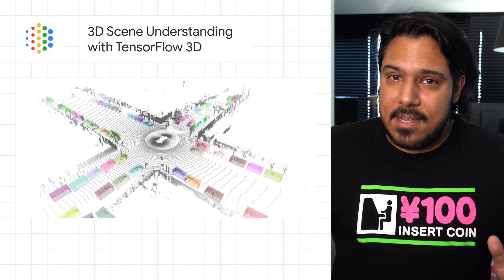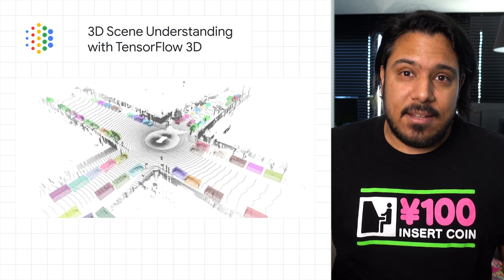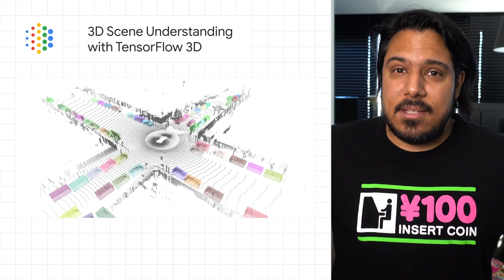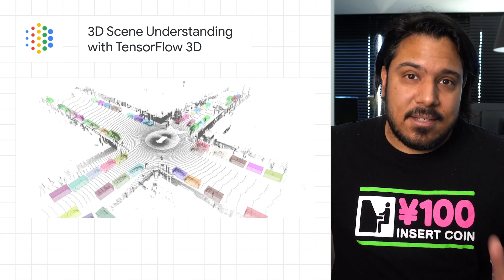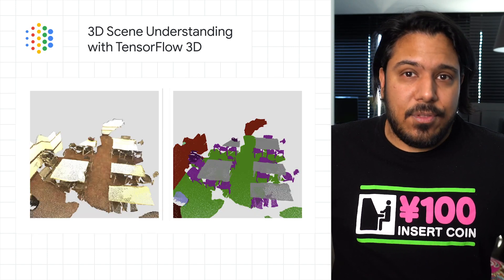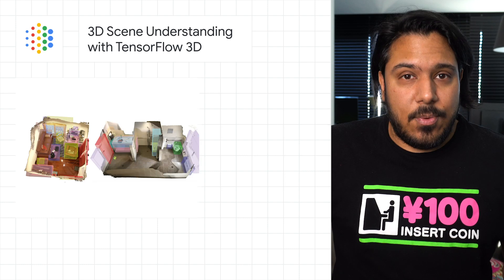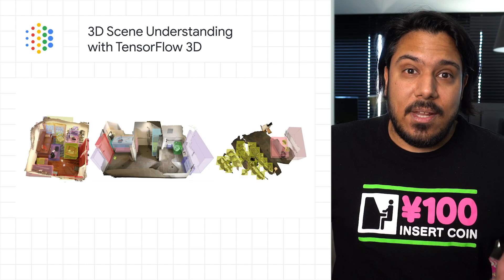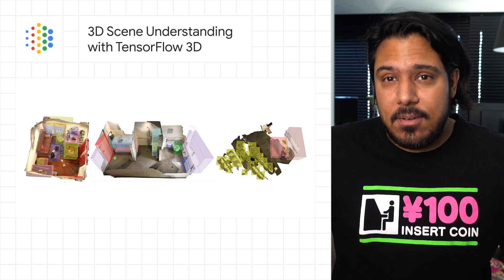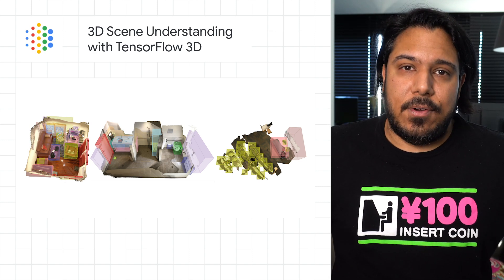The growing ubiquity of 3D sensors like LiDAR and depth sensing cameras has created a need for scene understanding technology that can process data these devices capture. That's why we're releasing TensorFlow 3D, a library that's designed to bring 3D deep learning capabilities into TensorFlow. TF3D contains training and evaluation pipelines for state-of-the-art 3D semantic segmentation, 3D object detection, and 3D instance segmentation with support for distributed training. This post on the Google AI blog gives a ton of info about the framework plus a link to the GitHub repo if you want to try it out for yourself.